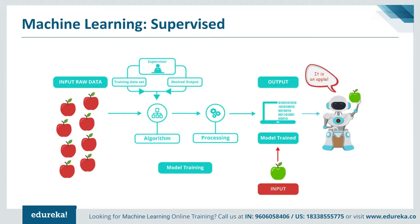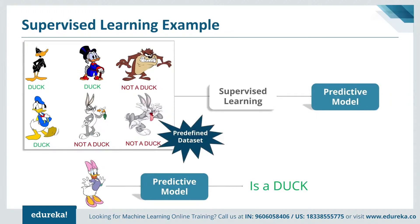Another example: the image shows a supervised learning process used to produce a model capable of recognizing ducks in an image. The training data set is composed of labeled pictures of ducks and non-ducks. The result of supervised learning is a predictive model capable of associating a label — duck or not duck — to a new image presented to it. Once trained, the resulting predictive model can be deployed to a production environment, such as a mobile app, ready to recognize new pictures.